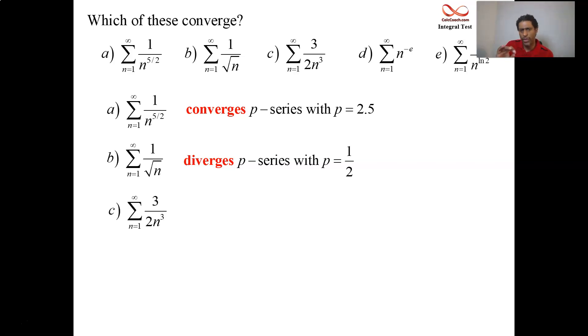3 over 2n cubed. Those constants are just in there to confuse you. Don't let them confuse you. Constants can be factored out of series. Take the 3 out, take the 2 out. We're talking about three halves times the series one over n cubed, which is a p-series with p equals 3, which is greater than 1, so it converges.